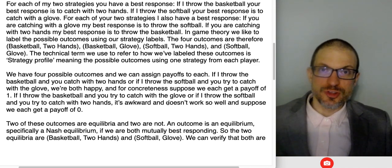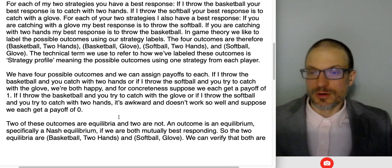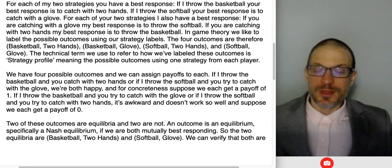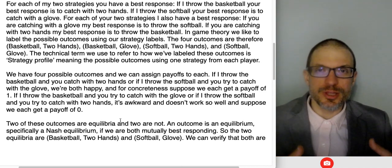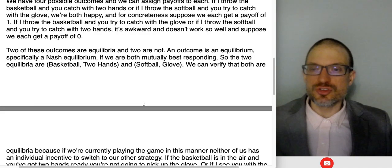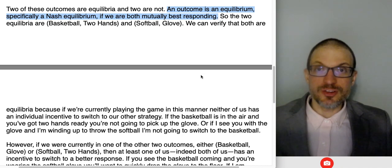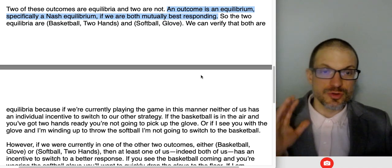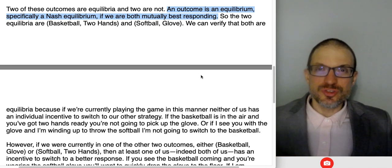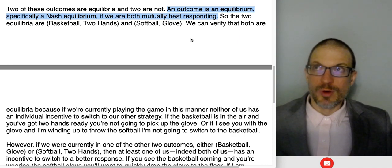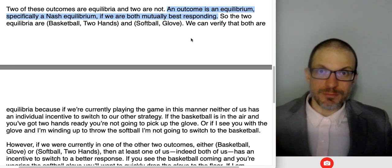Flip side: my best response to your choice of catching with a softball glove is for me to throw the softball. My best response to your choice of catching with two hands is to throw the basketball. It turns out we can define an equilibrium in the game. If we want to take the Nash equilibrium solution concept — a convention for how to solve the game, a prediction of how we think players ought to play — Nash equilibrium requires that players are mutually best responding. An outcome is a Nash equilibrium if we are both mutually best responding.